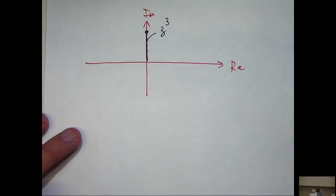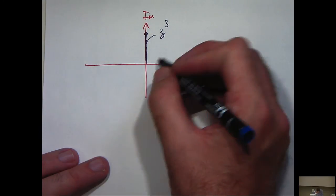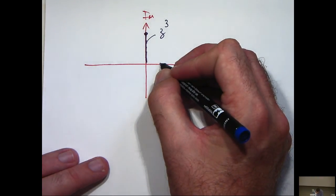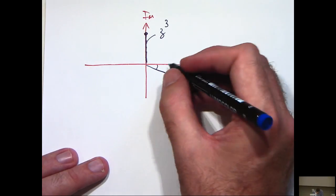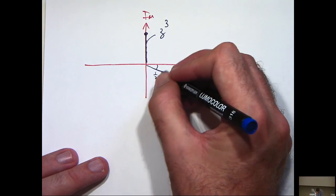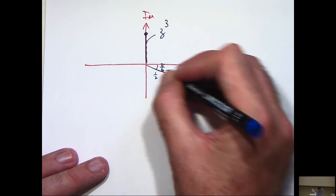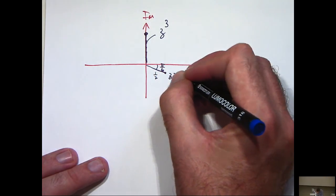Secondly, we want to plot (1/2)e^(-iπ/6), so we go out 1/2 unit and rotate π/6 in the clockwise direction. So this is z^(-1).